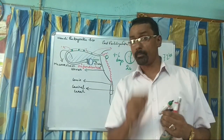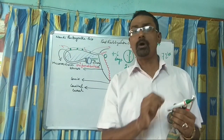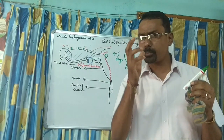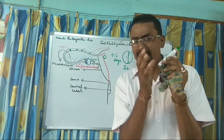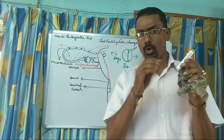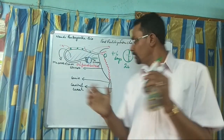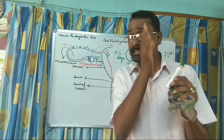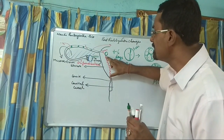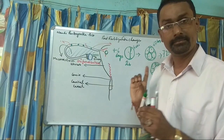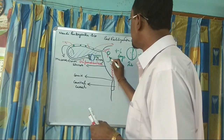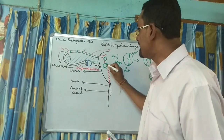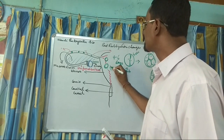On the 7th day, there will be implantation. Implantation is the process by which the developing embryo gets cemented into the endometrial layer — not just sticking, but cementing. A portion of the endometrial layer is rooted and the embryo enters inside on the 7th day.